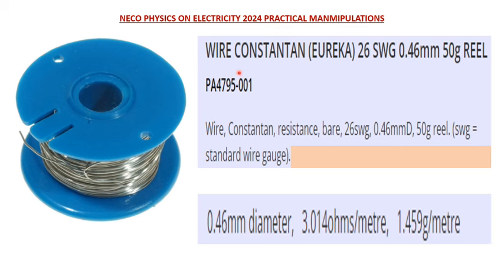Here you can see I have a constantan wire with standard wire gauge of 26 and 0.46 millimeter in diameter. What we need is just the resistance per unit length of this wire. NERCO asks schools to provide a constantan wire of 26 SWG — that is standard wire gauge. You can look for the diameter and find out the resistivity, then use that to determine the resistance per unit length, or you can just go online and search for the resistance per unit length.